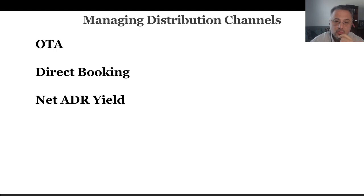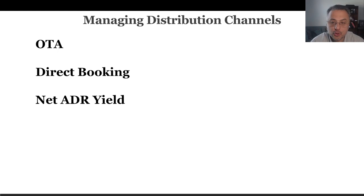There are two important things to understand. First, distribution channels such as franchisees, CRS centralization systems, travel agents, or various OTAs generate room sales for your property — but they are not doing that for free. Second, it will cost you to use their services. OTAs such as Booking.com or Expedia allow users to search many travel options and book for them. They can make money from both the traveler booking and the supplier providing the rooms.